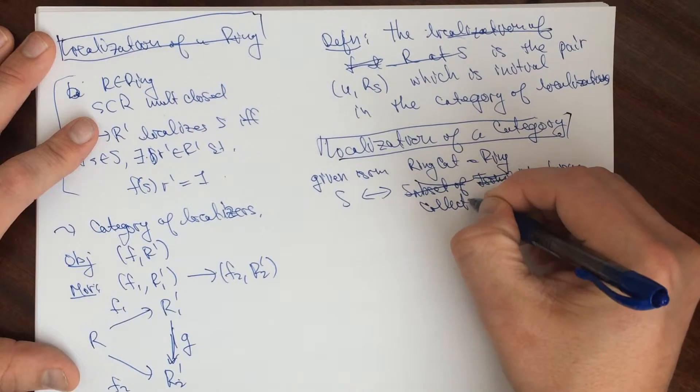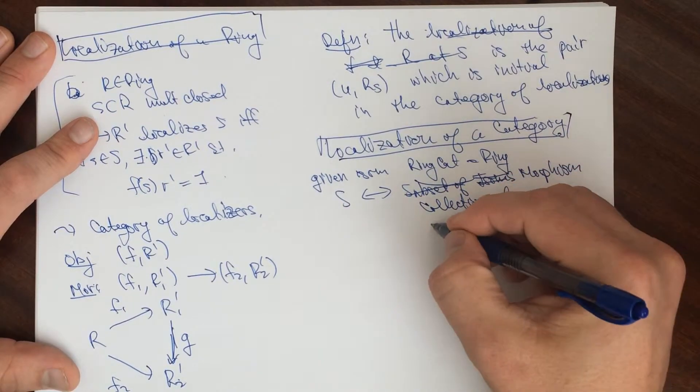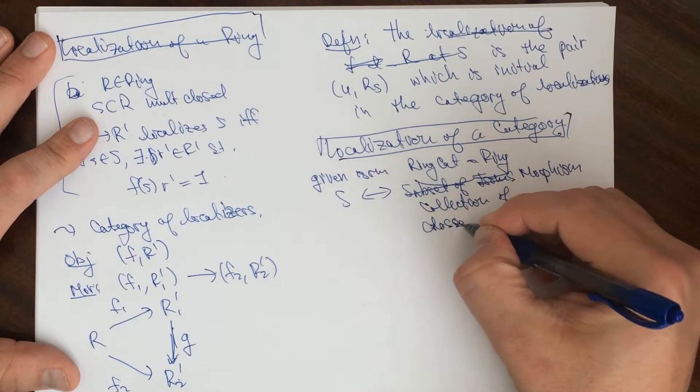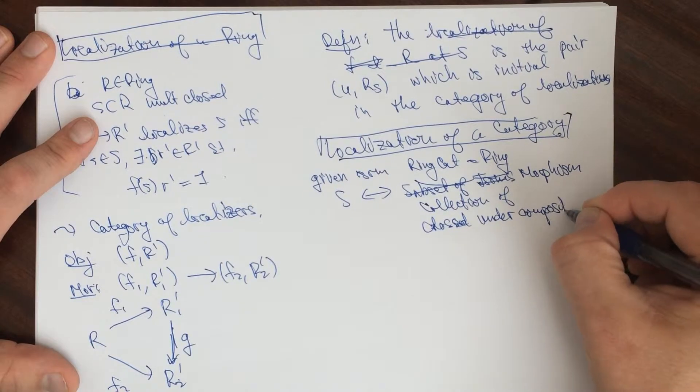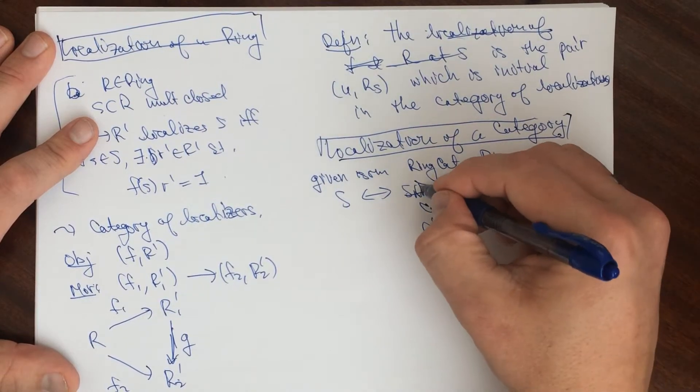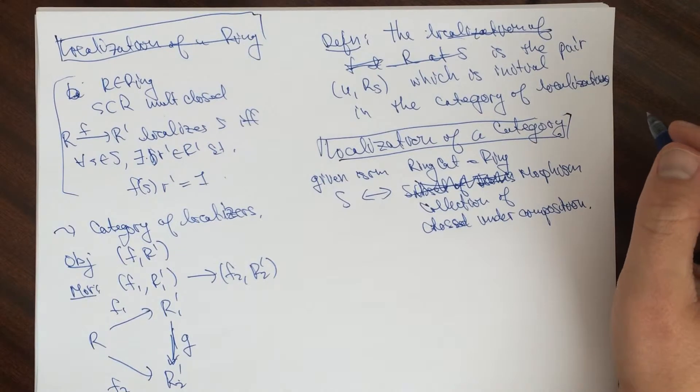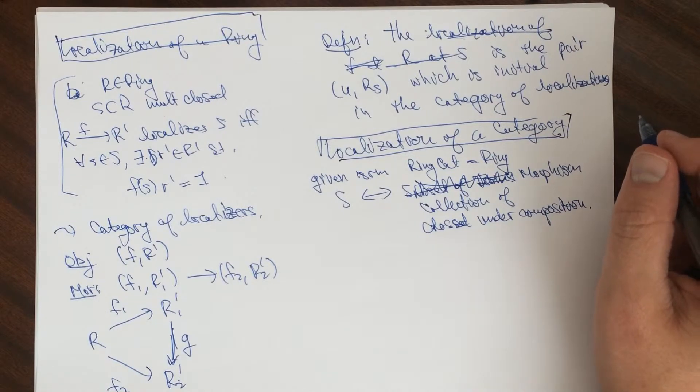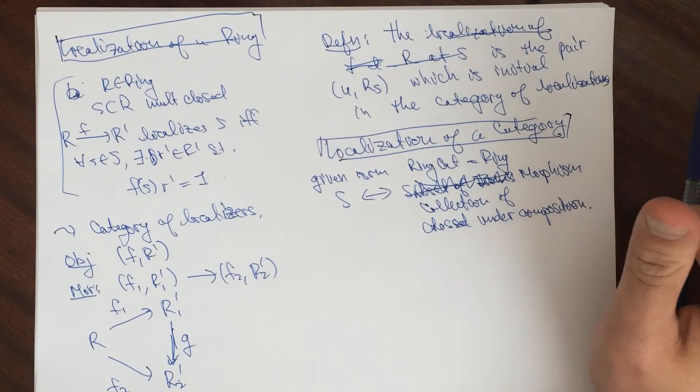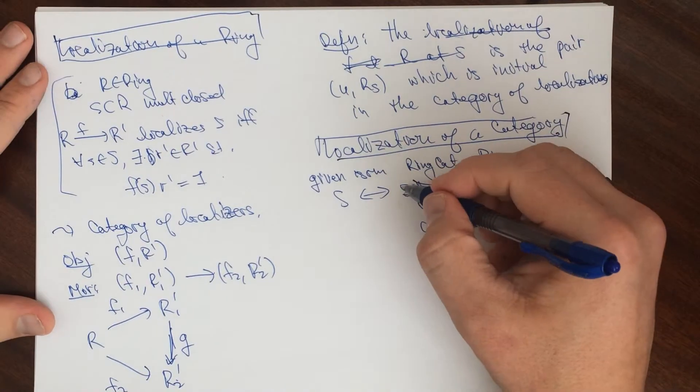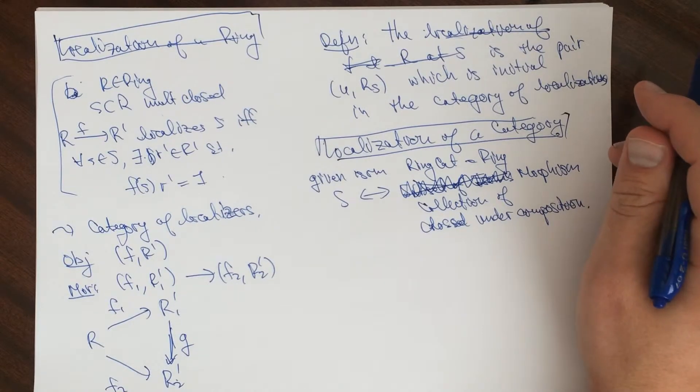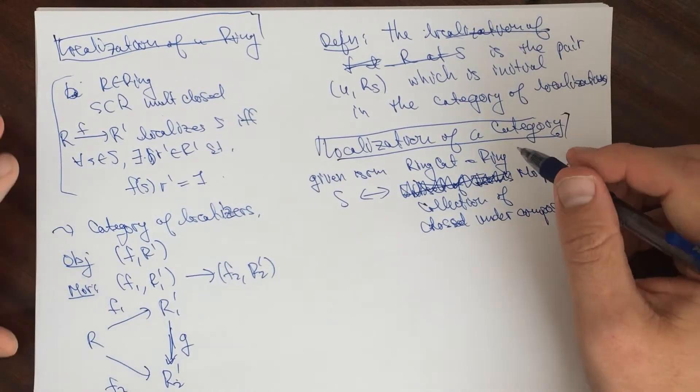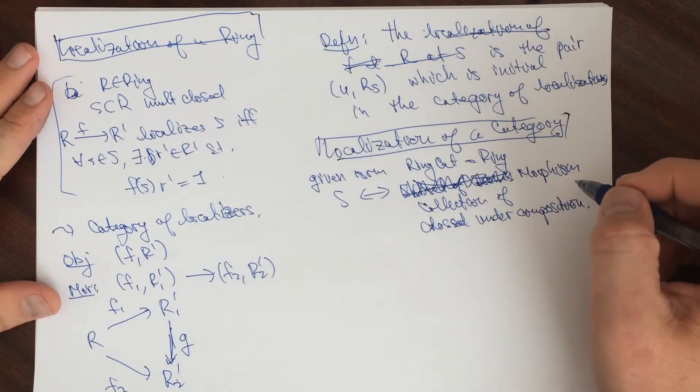Closed under composition. It's a monoid. So we have a collection of morphisms under composition.